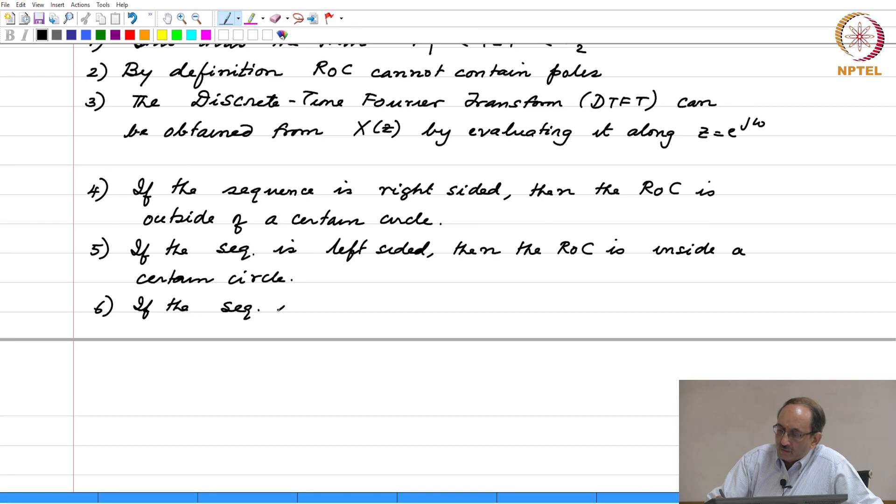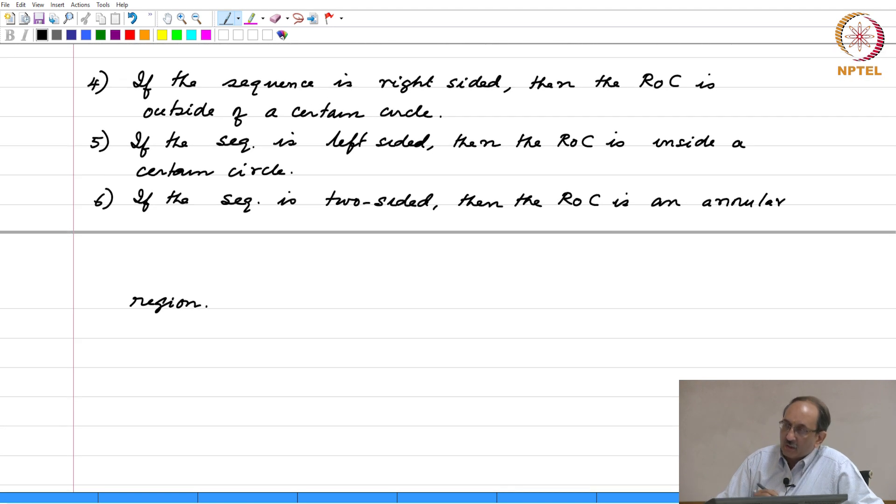If the sequence is two sided, then the ROC is an annular region. By two sided here, we mean infinite duration on both sides.